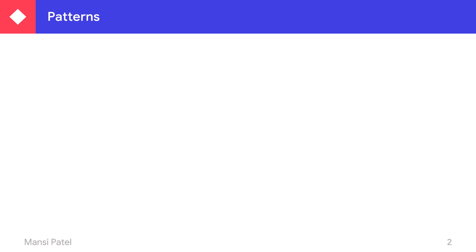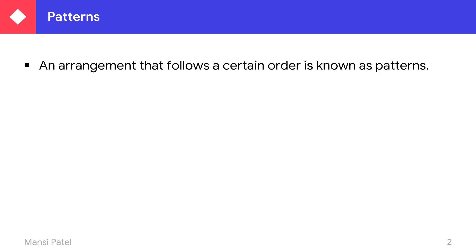Do you know what is a pattern? How you can draw these patterns? Where are you looking this pattern? And how can you form these all patterns? An arrangement that follows a certain order is known as patterns. If you look around you everywhere, you can see some design on the floor, some design on the furniture, some objects — in that some designs are there. These all designs, if they follow a certain order, if they repeat that design, if they repeat that shape, then that arrangement is known as patterns.